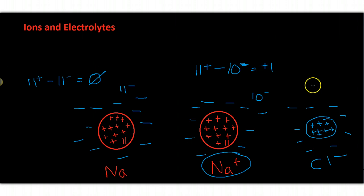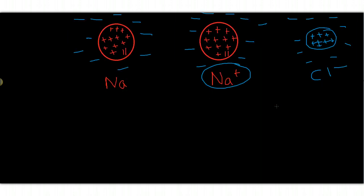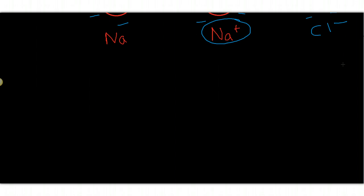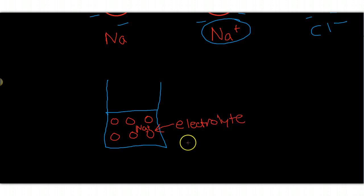Now that is the sodium ion. Now interestingly enough, if you take an ion and you put it in a cup of water or a beaker of water or what have you, I take a whole bunch of sodium ions and I put them in water, then they become electrolytes. So an electrolyte equals an ion dissolved in water.